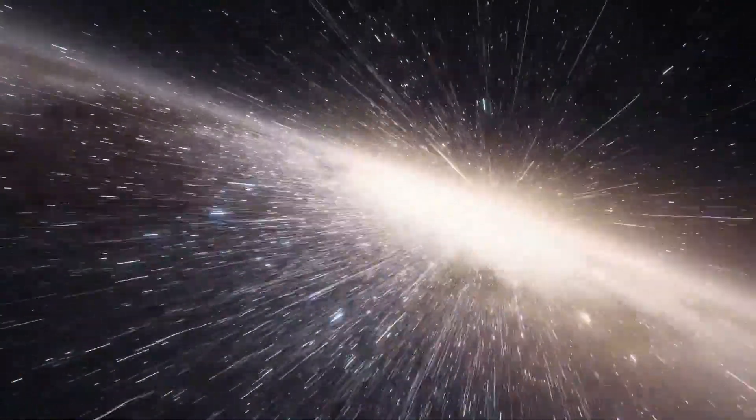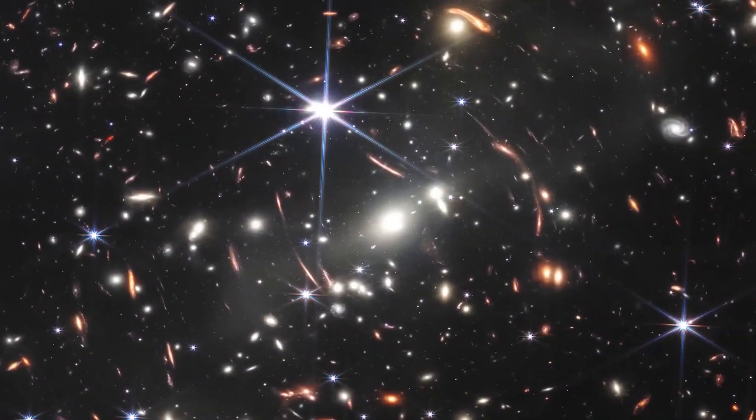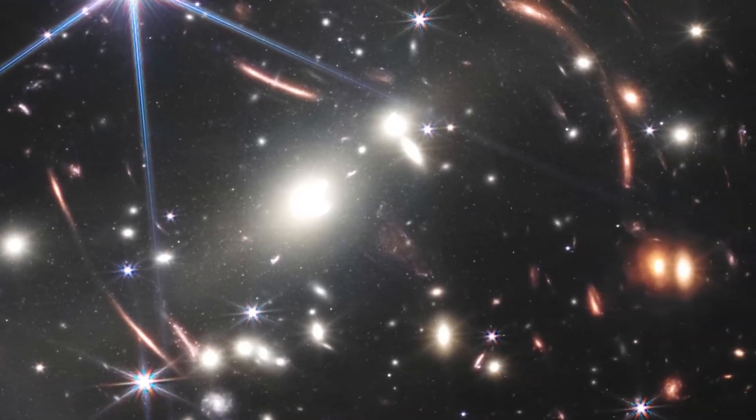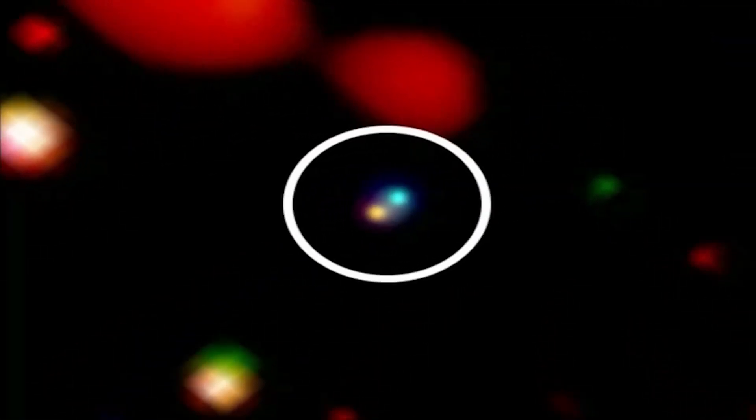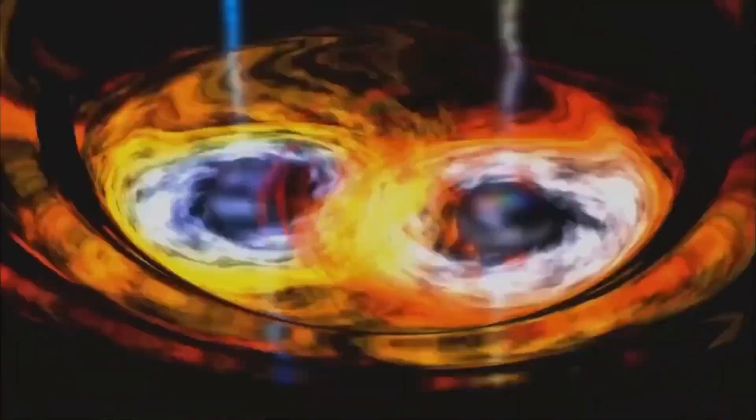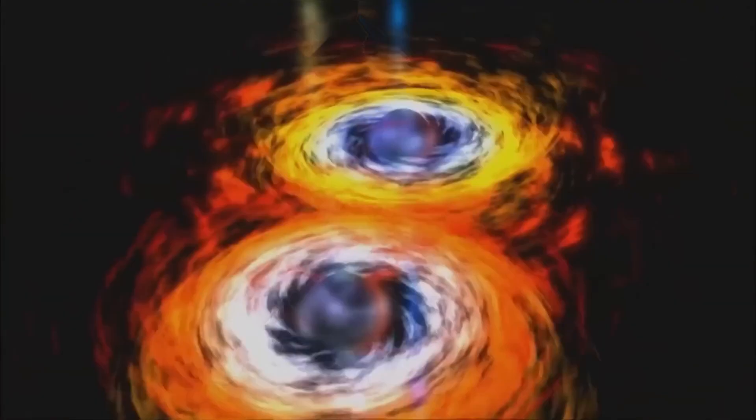Now, researchers can measure the velocities of these seven galaxies, which gives them the confidence to confirm that they are bound together in a proto-cluster. To put this in perspective, NASA scientists compared these distant galaxies to small drops of water in different rivers that will eventually join together to form a large and powerful river.